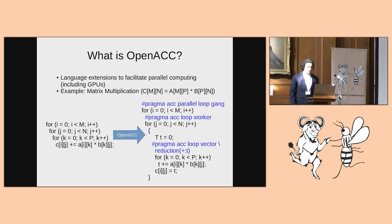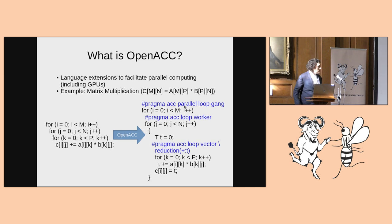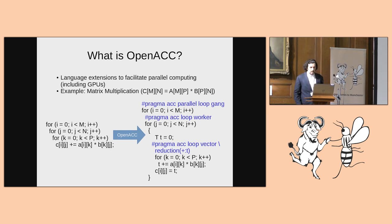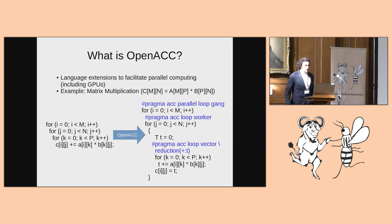The parallel directive instructs the compiler to offload the body of that for loop to a function for a device. Then you'll see the loop directives: parallel loop gang, loop worker, loop vector. Those instruct the compiler to generate code that executes the loop on the GPU across the different threads.